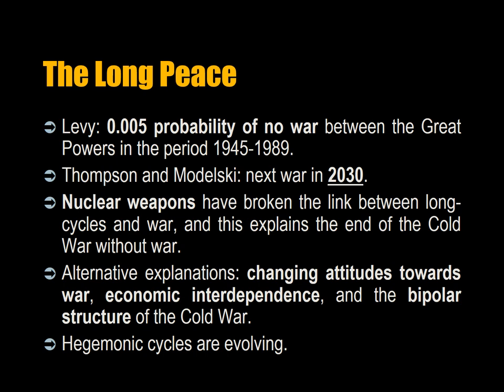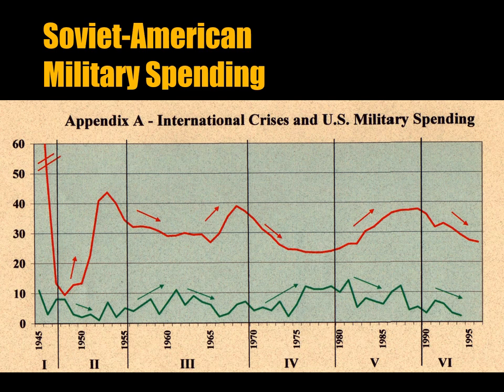Perhaps there was never simply a power transition because the Soviet Union was too weak. Here you can see a chart of American and Soviet military spending and how it rose and dropped. Specifically, the Soviets were never in a position to do a power transition — all they could do was threaten military attack.